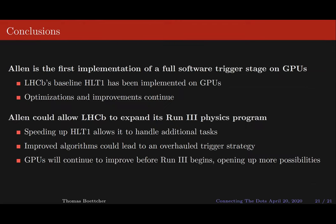In conclusion, Allen is the first implementation of a full software trigger stage on GPUs. LHCB's baseline HLT1 has been implemented on GPUs and we can carry out the baseline physics program, while continuing to optimize and improve Allen. Maybe even more exciting is that Allen could allow LHCB to expand its run three physics program — speeding up HLT1 is not just an incremental improvement but allows you to perform additional tasks and expand the kind of physics you can do. These improved algorithms can lead to completely overhauled trigger strategies, and we expect GPUs will continue to improve before run three begins, so these new possibilities will only continue to expand.